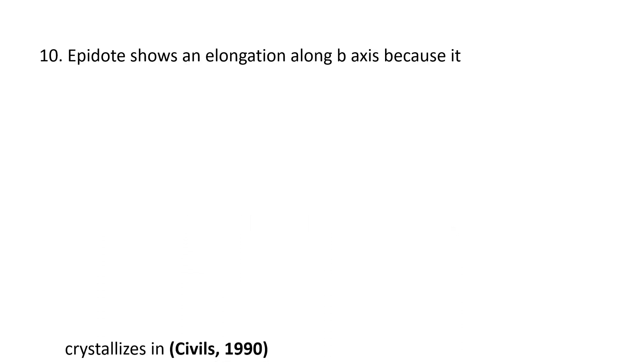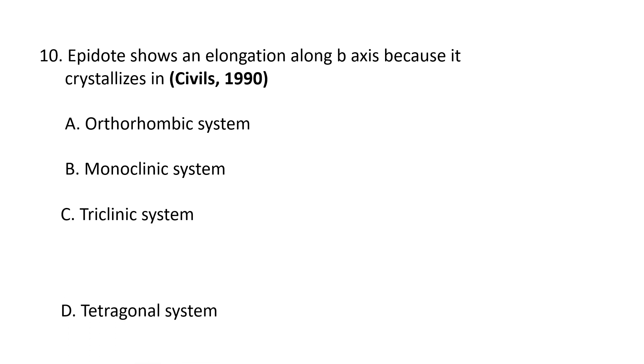Next question. Epidote shows elongation along B axis because it crystallizes in: orthorhombic system, monoclinic system, triclinic system, tetragonal system. So epidote crystallizes in monoclinic crystals.